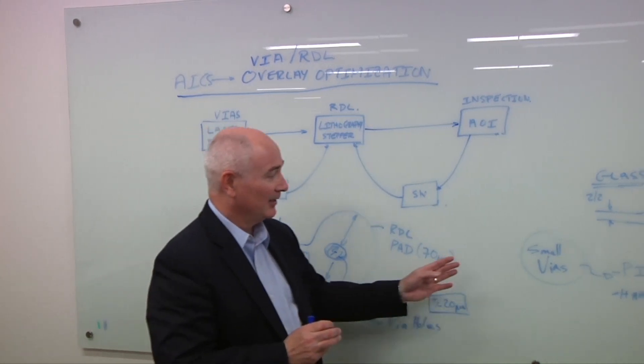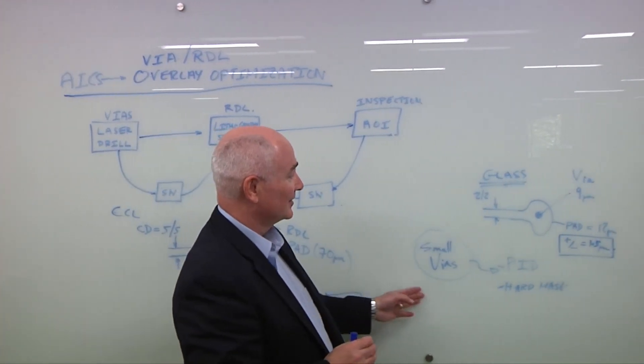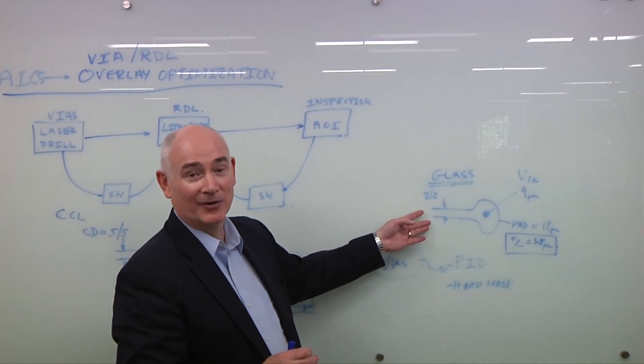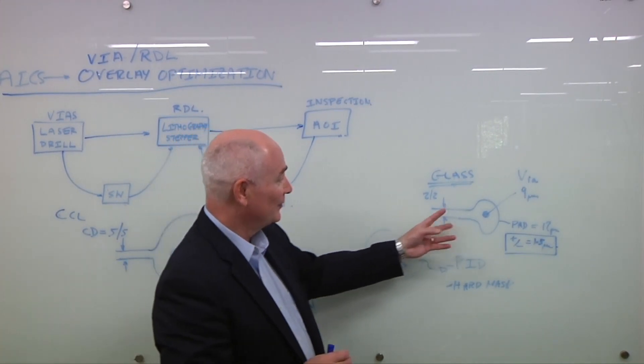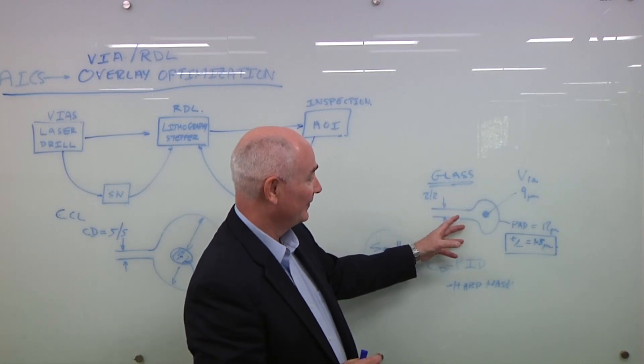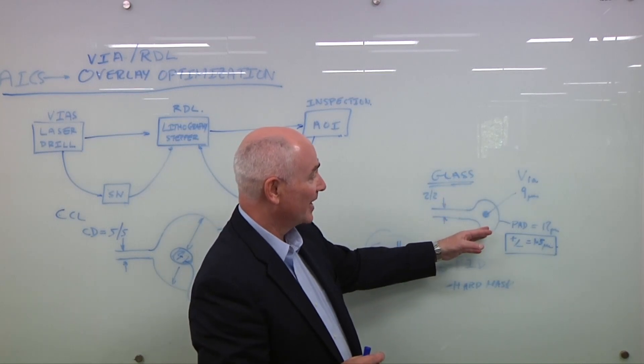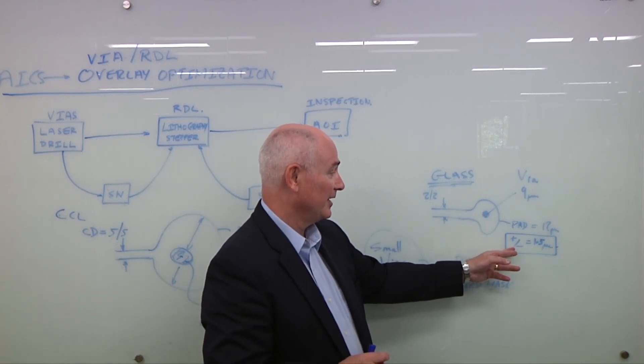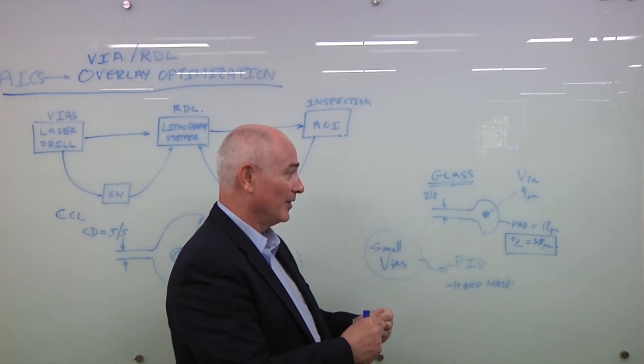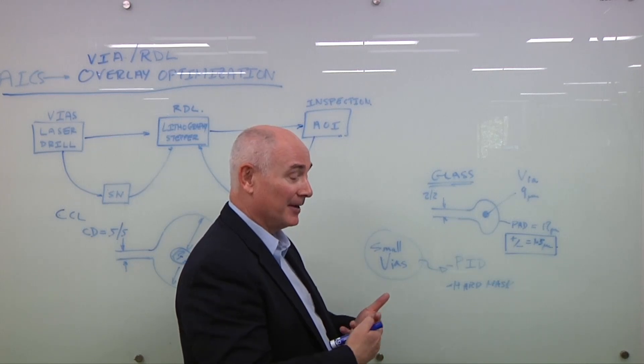Of course, if you take that into consideration and you look at what you can do with glass, if you're using a 2.2 micron RDL structure, you can now reduce the size of this landing pad for the RDL down to, say, 12 microns with a via of 9 microns.